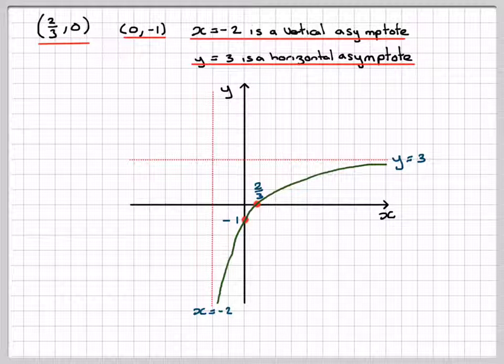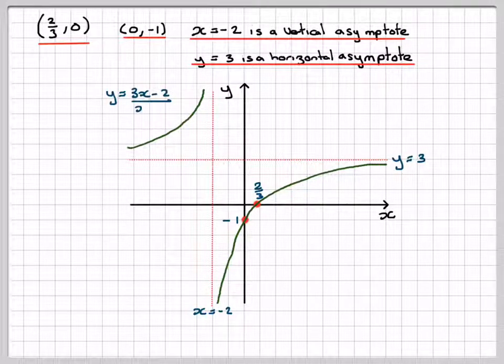Therefore the only part the graph can be in is this bit here. To finish the graph, we draw that bit in there and label the graph y equals 3x minus 2 over x plus 2. I've shown you how to draw a bilinear function without a GDC.